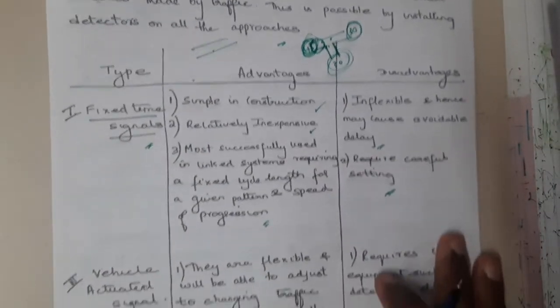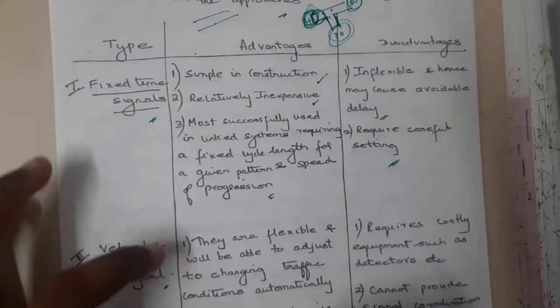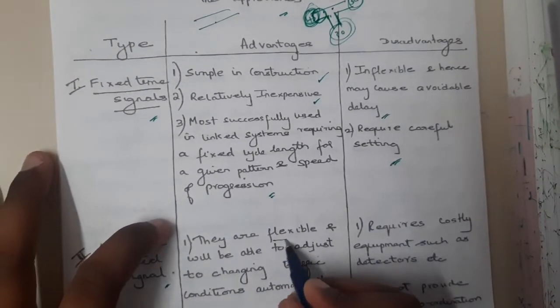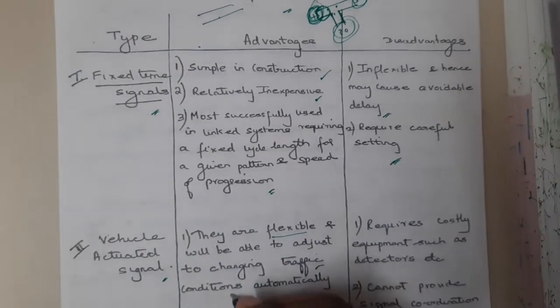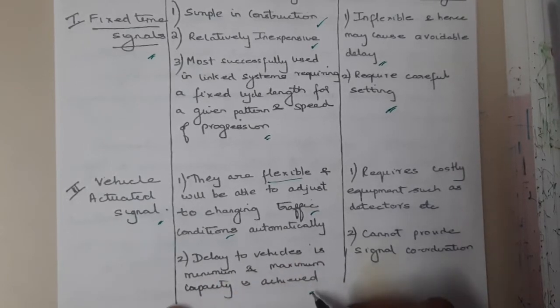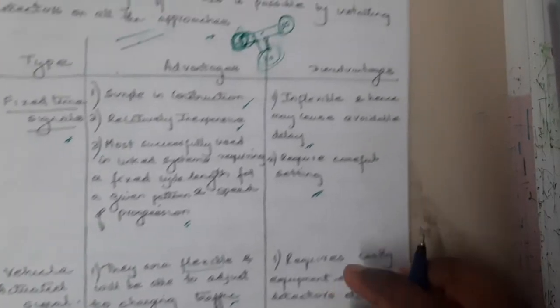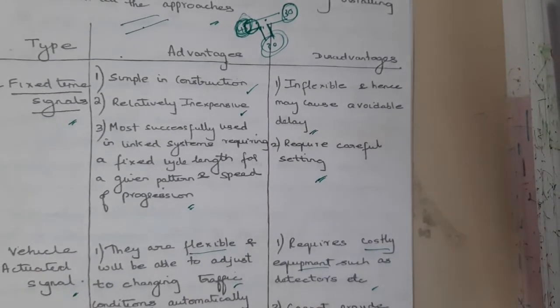Vehicle actuated signal - the major advantage is it is 100% flexible as it adjusts based on the traffic condition. Delays to vehicle is minimum and maximum capacity is achieved.